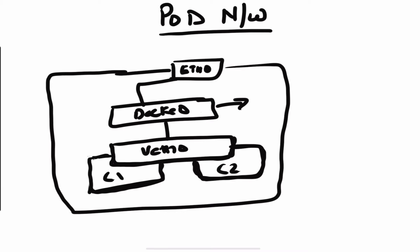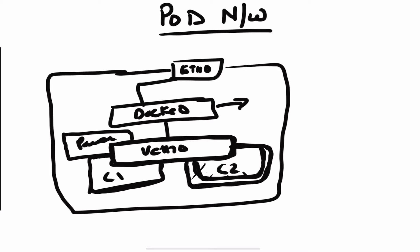But how is this veth0 setup being done? Kubernetes actually implements this shared network namespace by running another container called the pause container. If you go into your Kubernetes host and do a docker ps, you would see one or more pause containers running. The pause container functionally does nothing — its only function is to hold the network namespace. So if one container goes down and another comes up, the network namespace stays there. That is why they actually share the network namespace.